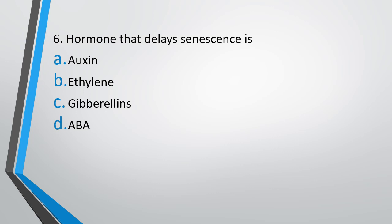Question 6: The hormone that delays senescence is — Option A: auxin, Option B: ethylene, Option C: gibberellin, or Option D: ABA. The correct answer is Option C, that is gibberellins delay the senescence.